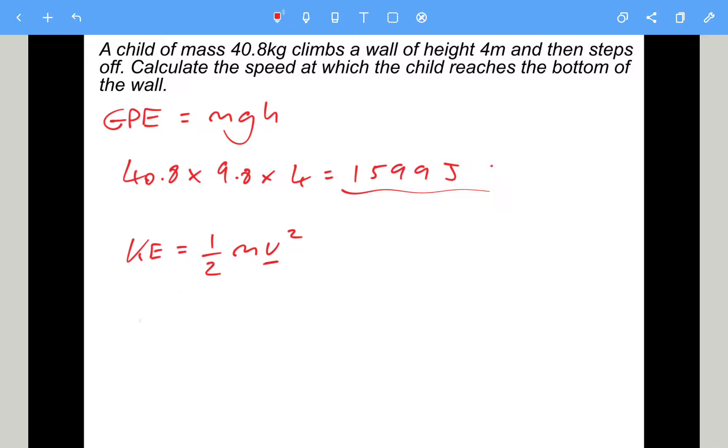So to rearrange to find the speed, we need to get rid of the half, which is 2 times the kinetic energy divided by the mass. If you're struggling with this one, you might want to watch my previous video. And then speed is the square root to get v. So 2 times the kinetic energy, so we've got 2 times 1599 divided by the mass which is 40.8. Then we need to square root to find the speed, and the speed is 8.9 meters per second.